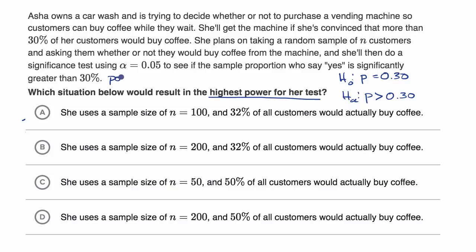So a high power means the lowest probability of making a type two error.